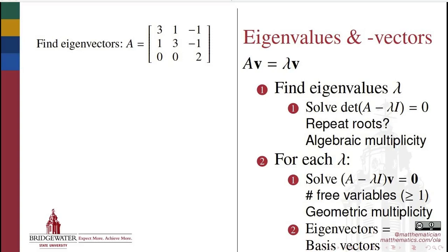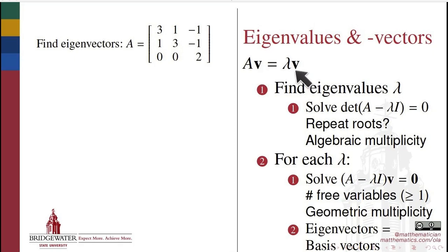The eigenvectors of a matrix are those vectors on which the matrix acts by scalar multiplication. In other words, the result of multiplying an eigenvector of A by the matrix A is that that vector merely gets scaled by a scalar multiplication factor.